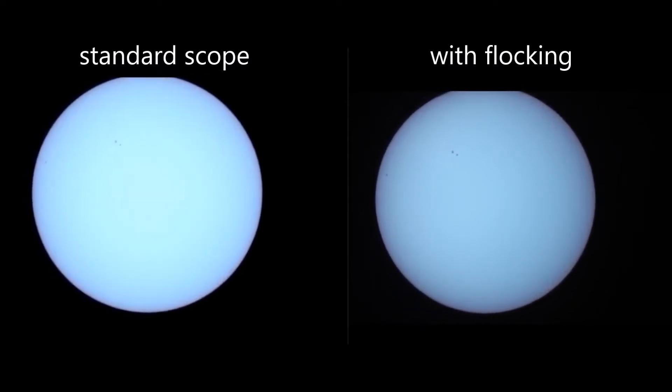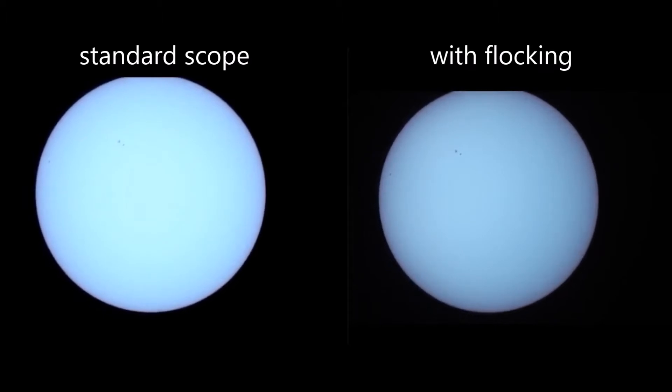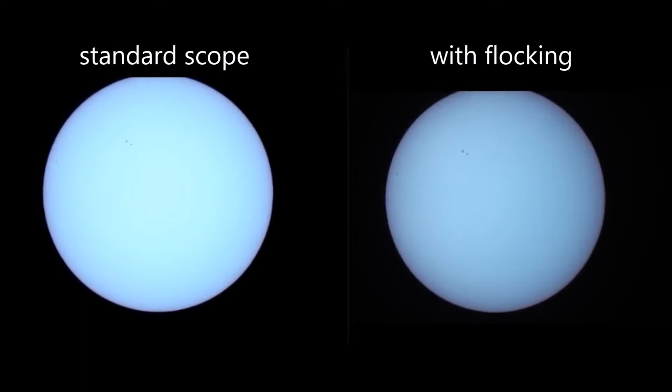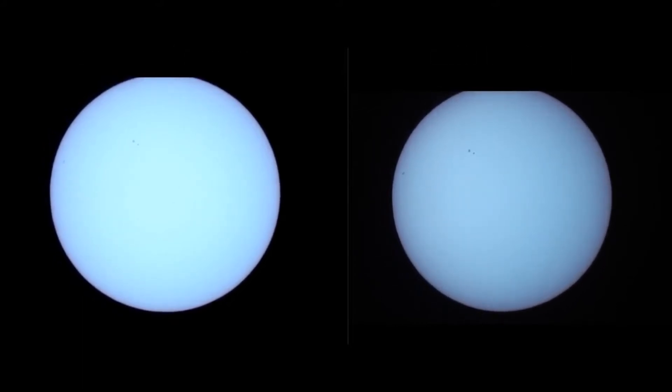So moving on to an astro target, this is a view of the sun. There's not a lot of activity now, we're close to the solar minimum. But I think you can see on the left and right a small difference in contrast. And if we take a still image from each of those two videos, I think the improvement is evident. The paper seems to have increased the contrast of this particular sunspot.